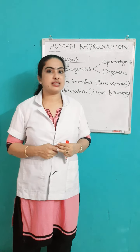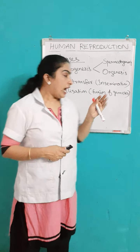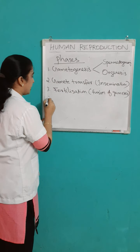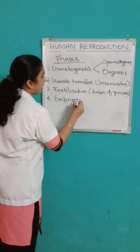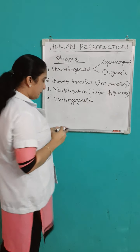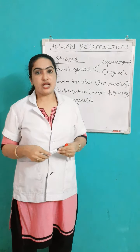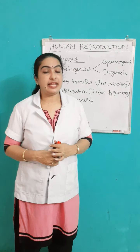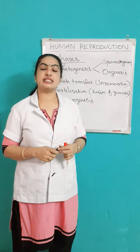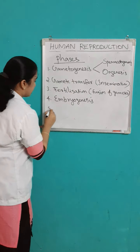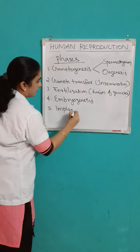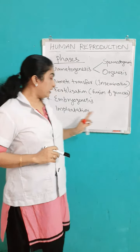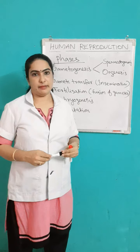The developing zygote is known as an embryo, and the formation and development of the embryo is known as embryogenesis — that is the next phase. For the further development of the embryo, the embryo from the fallopian tube enters into the uterus, and that process is known as implantation. Implantation is the embedding of the embryo in the uterine wall for further development.